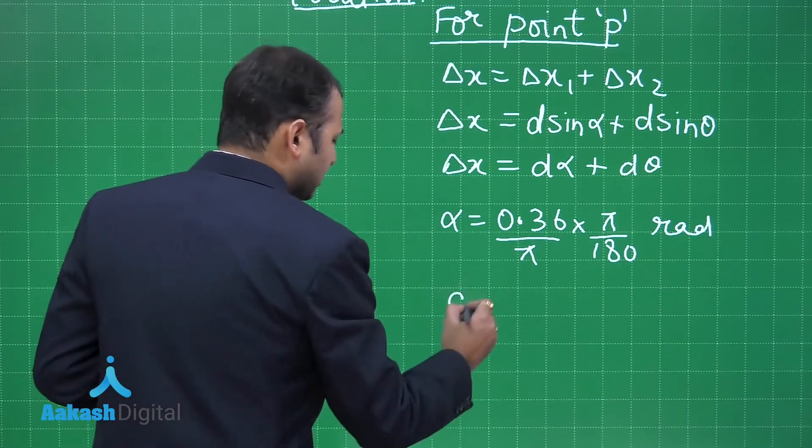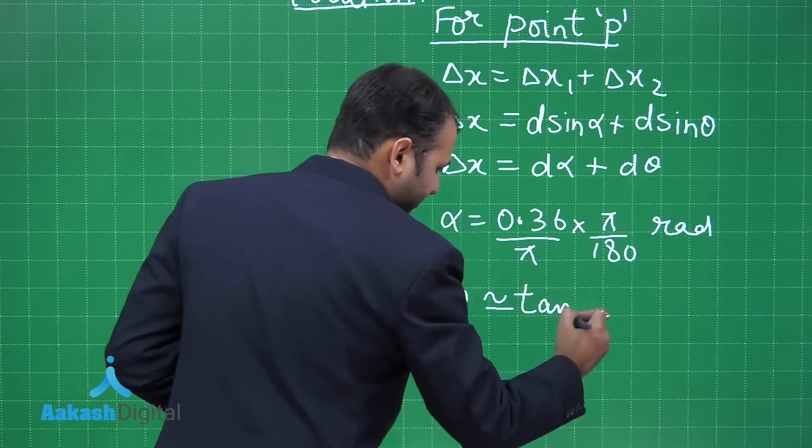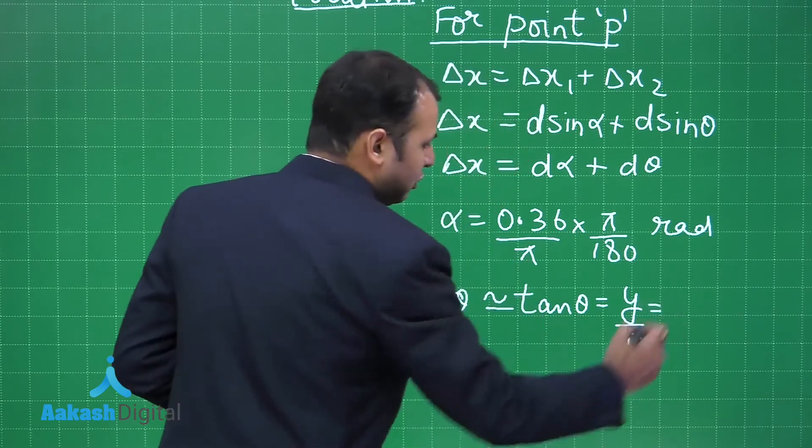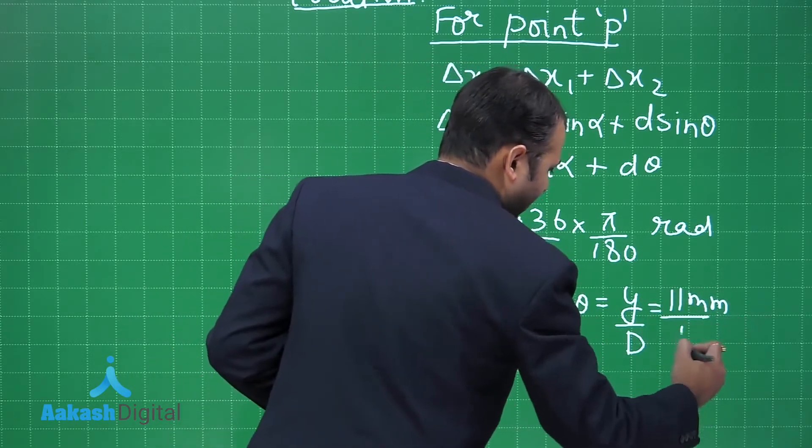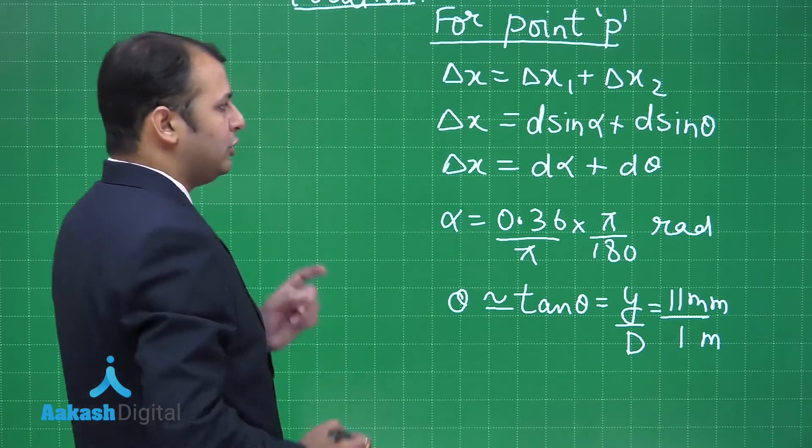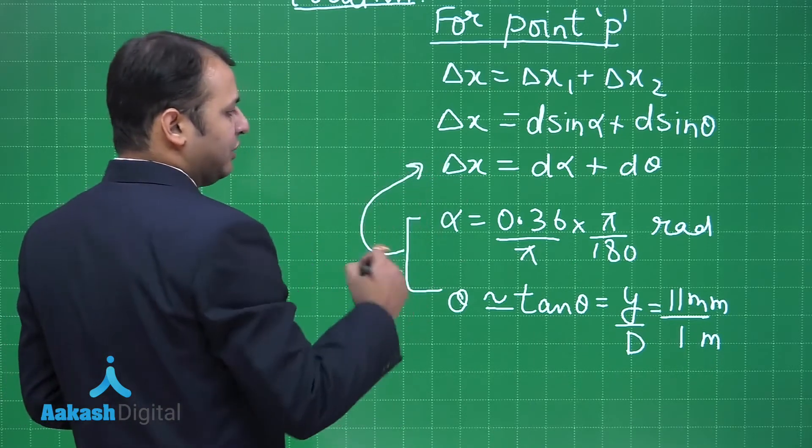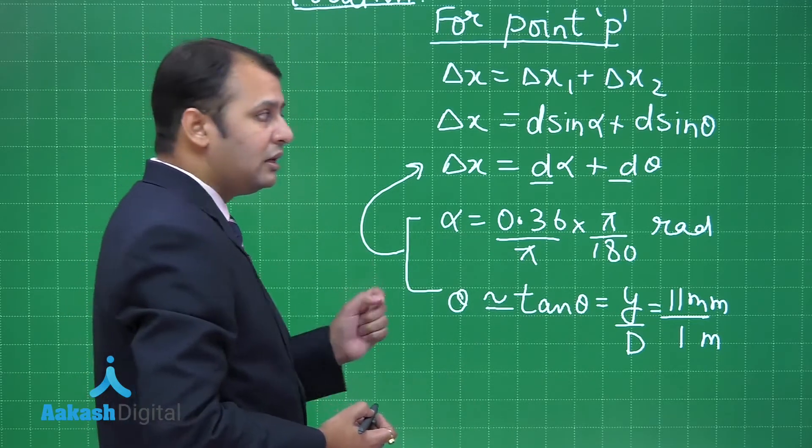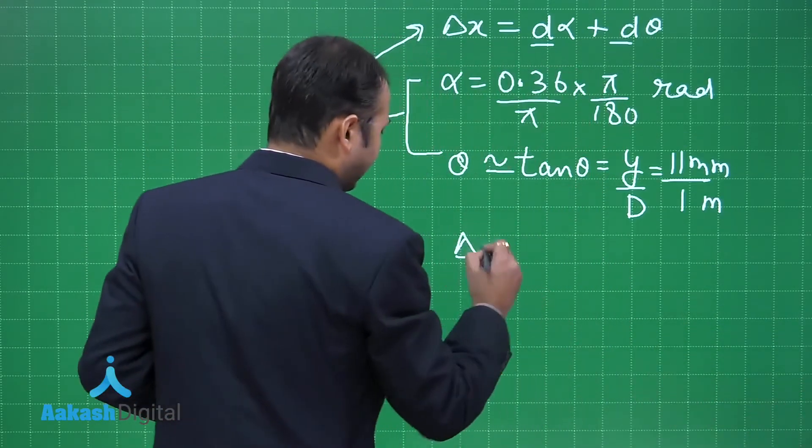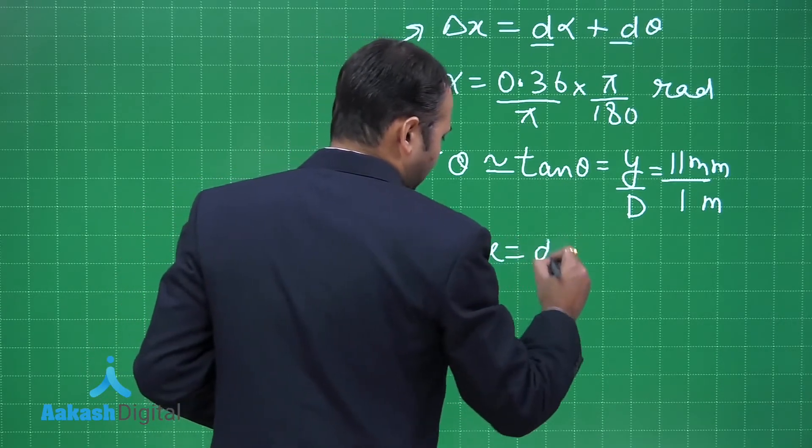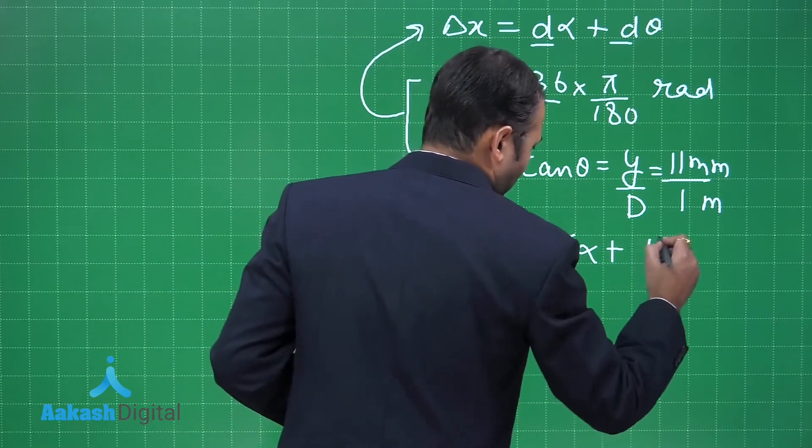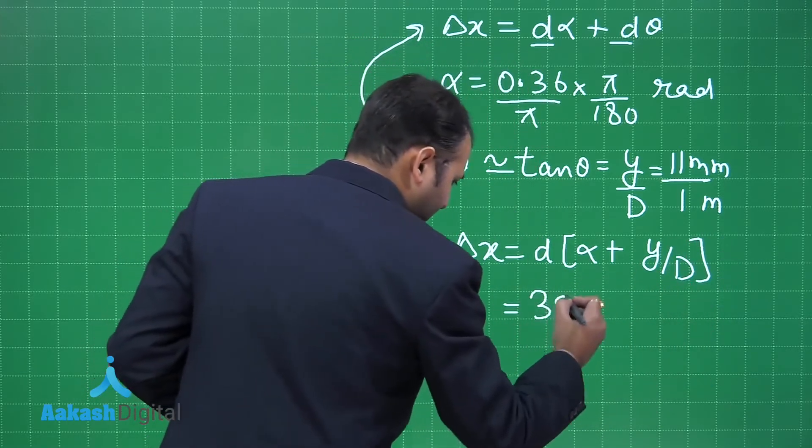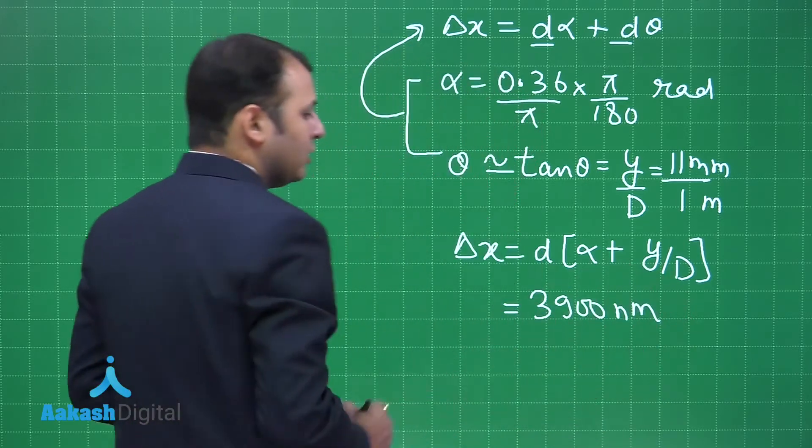When you talk about alpha, the alpha value is given to us as 0.36 by pi degrees and that has to be converted into radians. When you talk about theta, theta will be nearly equal to tan theta, that will be equal to y by capital D. The value of y given to us is 11 millimeters, and the value of D is 1 meter. When you put down both these values in this equation where d is already known as 0.3 millimeter, you will get delta x as d alpha plus y by D. Just put down the values. It would be 3900 nanometers.